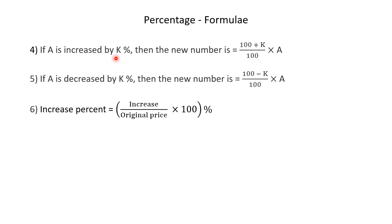If A is increased by k percent, then the new number is (100 + k)/100 × A. If A is decreased by k percent, then the new number is (100 − k)/100 × A. The increase percent is equal to increase divided by original price, multiplied by 100 percent.